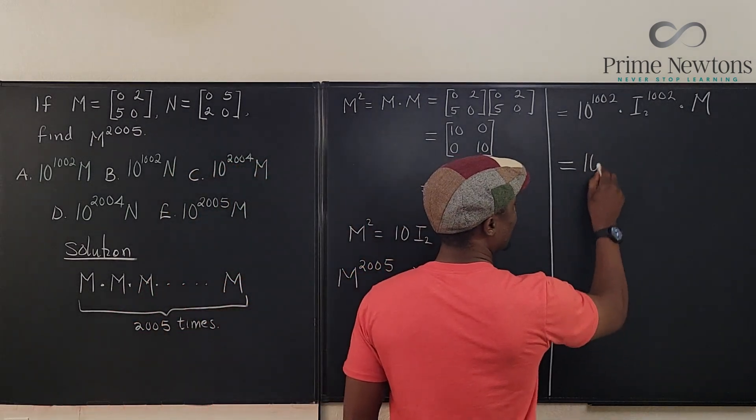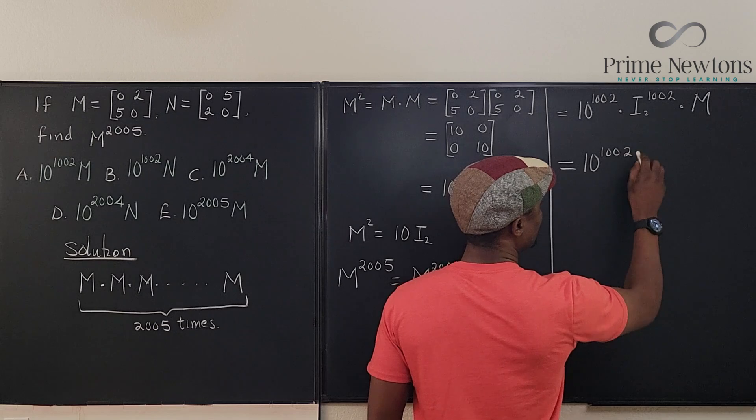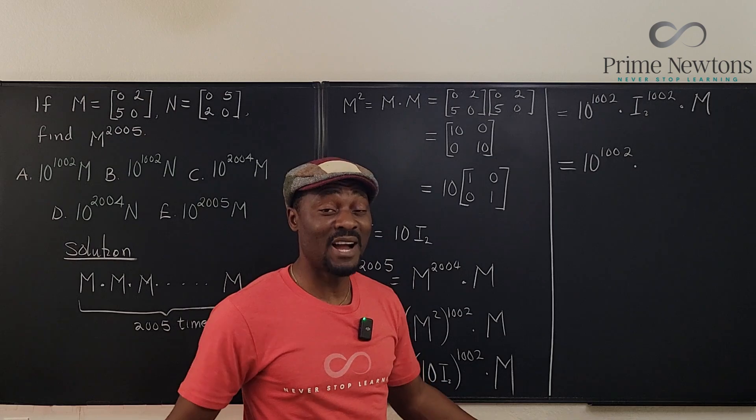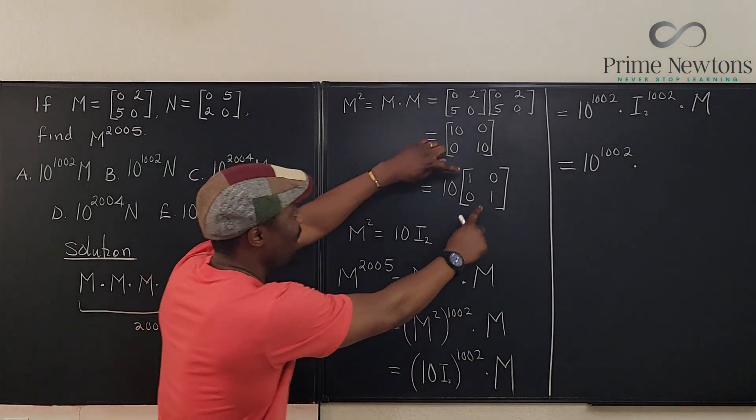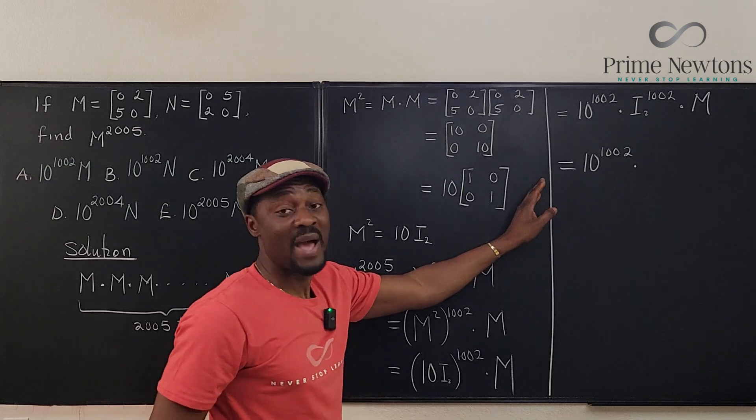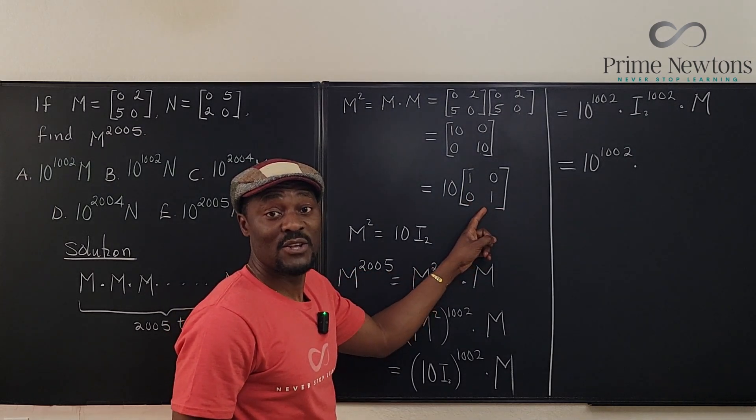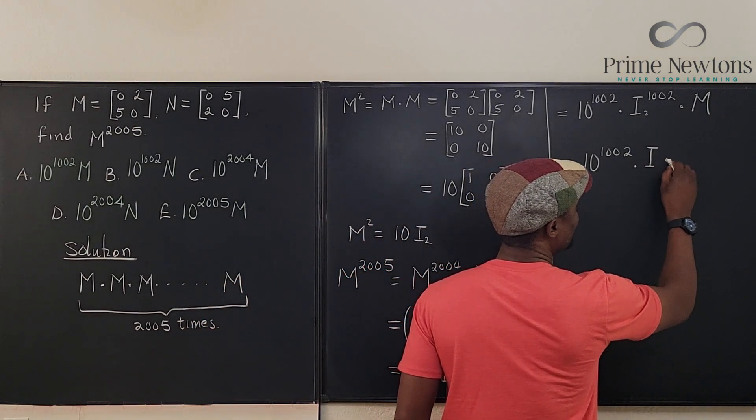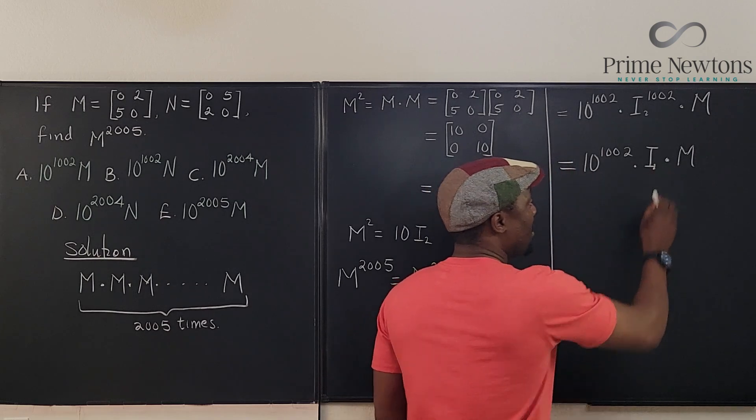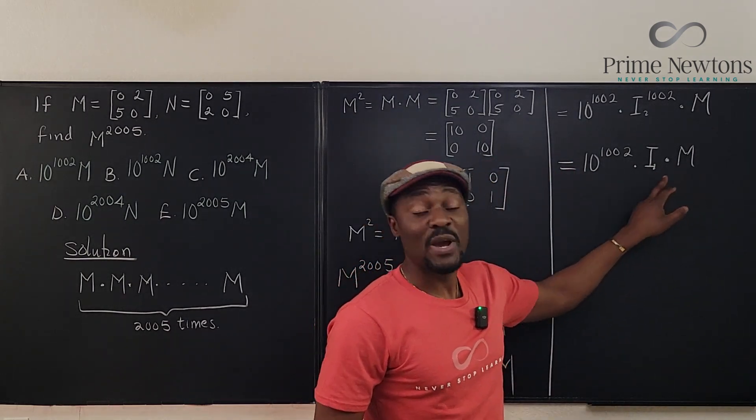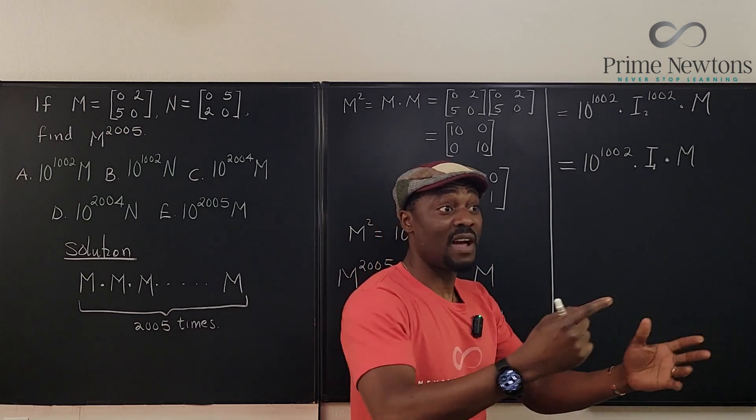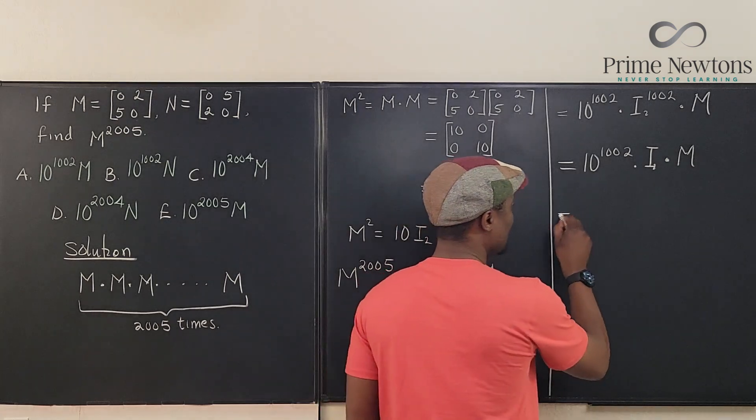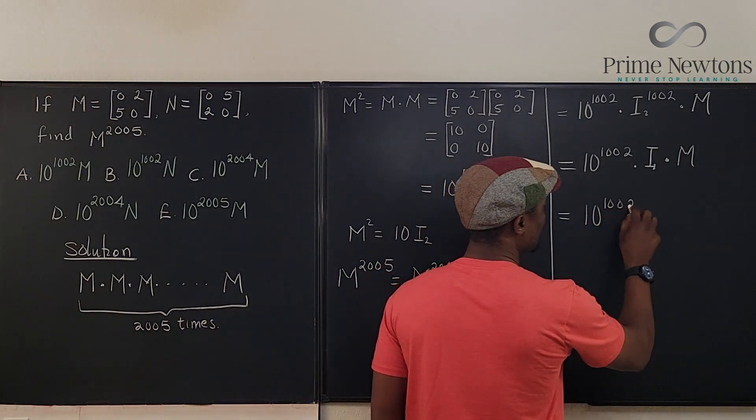This is going to be 10 raised to power 1002, applying laws of exponents. And then I raised to power 1002 times M. The identity matrix multiplied by itself a million times is still itself. It never changes. If you multiply this by itself, no matter how many times you do it, you'll keep getting the same answer. It's always [1 0; 0 1] all the time. So this is just going to be the identity matrix multiplied by M. But the identity matrix times any, that's why it's called the identity matrix. It doesn't change M. So the answer here is 10 to the 1002 times M.